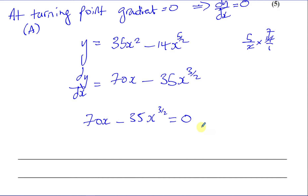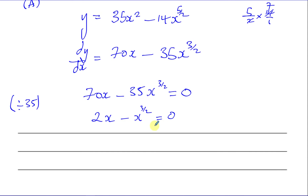We can get rid of these big numbers — both terms are divisible by 35. That goes into 70 twice, so we get 2x minus x to the power of 3 over 2 equals zero. To solve this, since we have zero on one side, take one term to the other side: 2x equals x to the power of 3 over 2. If there was another term here, we'd need a substitution, but we don't have to do that here.